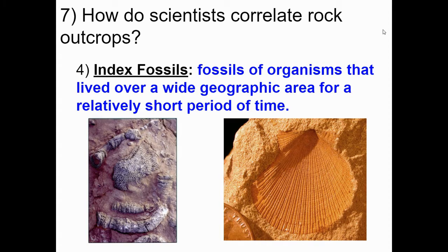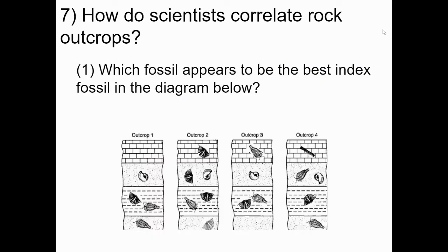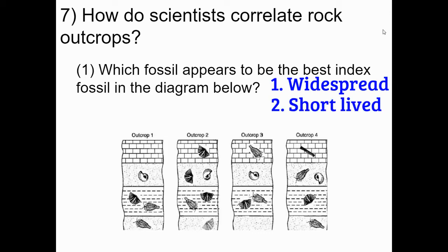The fourth and probably one of the most helpful correlating methods are index fossils. Index fossils are fossils of an organism that lived over a very wide geographic area for a relatively short period of time. Because of this widespread origin and short lifespan, they are so useful — if the organism lived for an extremely long period of time, like billions of years, it wouldn't help us accurately date anything. Take a look at each of these outcrops representing rocks in vastly different areas and the fossils within them. Which would be the best index fossil? Remember — a good index fossil is widespread and only lives for a very short period of time.